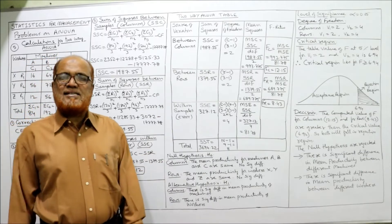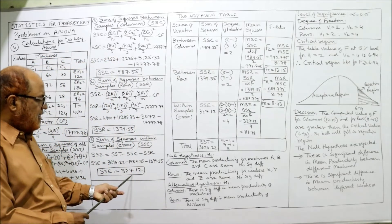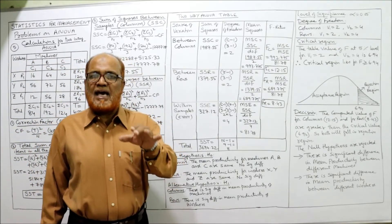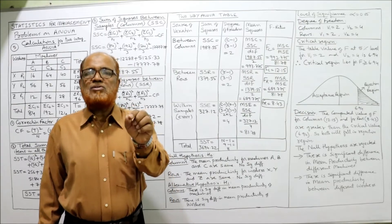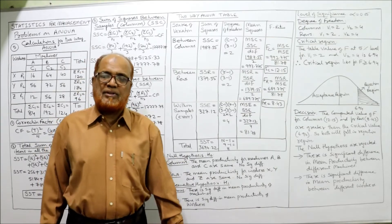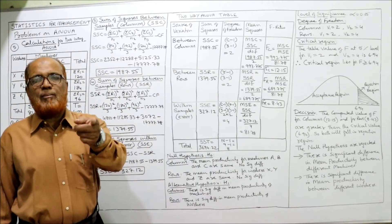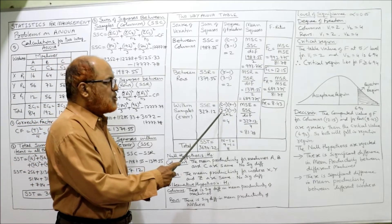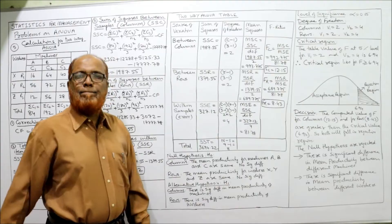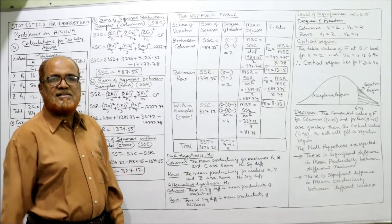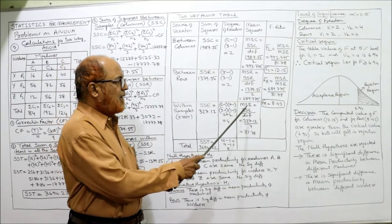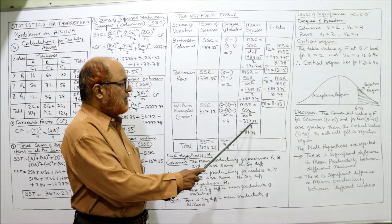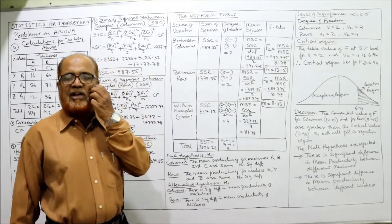Within samples (error): SSE = 327.12. The degree of freedom for SSE = (C − 1)(R − 1) = (3 − 1)(3 − 1) = 2 × 2 = 4. MSE = SSE / df = 327.12 / 4 = 81.78.